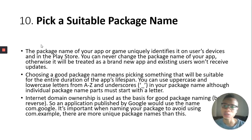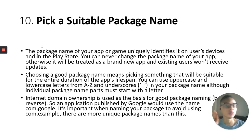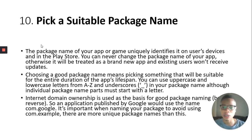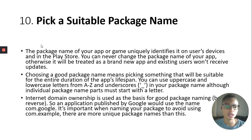Pick a suitable package name — also called an app ID — which you can normally find in your config.xml file. It's a name set while building an app for the first time, and it uniquely identifies your app on users' devices and the Play Store. No two apps can have the same package name. You must use lowercase letters; you can use uppercase and lowercase letters from A to Z and underscores. For example, a package name can be com.example.weatherapp.